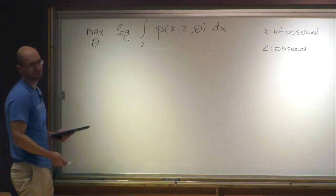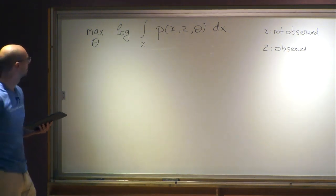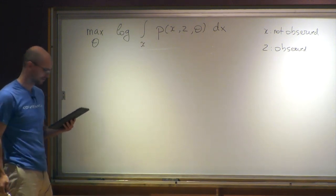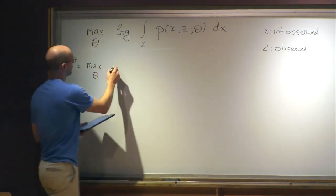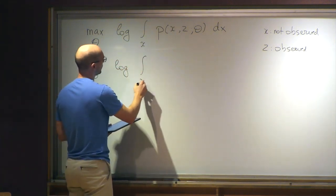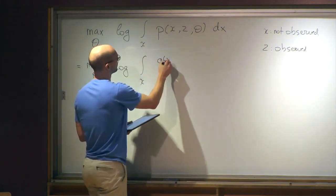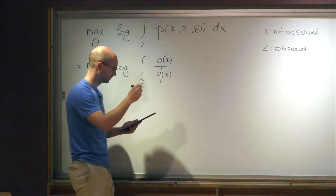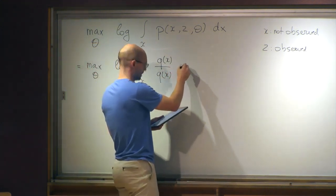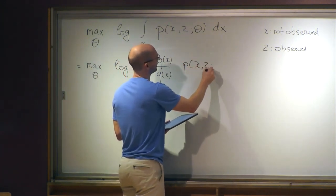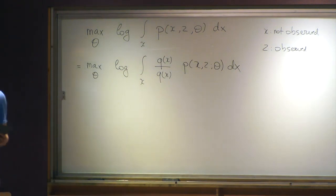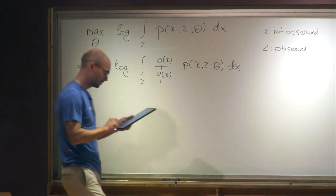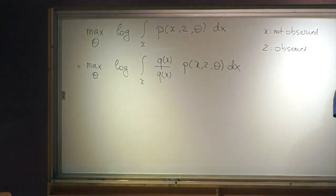Now we're going to play a trick. It's not obvious at all until you've seen it many times. I write this as max over theta of the log of the integral over X of Q(X) divided by Q(X) times P(X, Z | theta) dX — that's the same thing because we just multiplied and divided by Q, which together becomes a factor of one. Now we're going to use Jensen's inequality to try to simplify this. What is Jensen's inequality? Pictorially, if you have a concave function, for any two points x1 and x2 the line connecting them lies below the function.